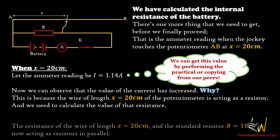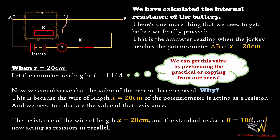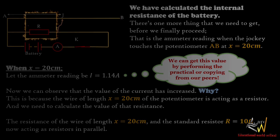We need to calculate the value of that resistance. The resistance of the wire of length S, equal to 20 cm, and the standard resistor of 10 ohms, are now acting as resistors in parallel.